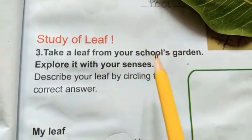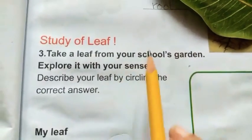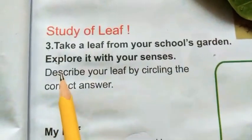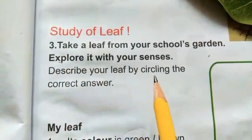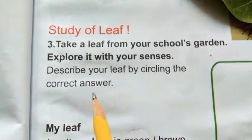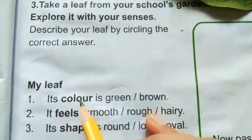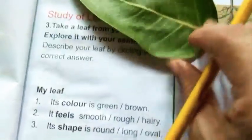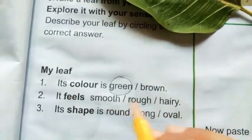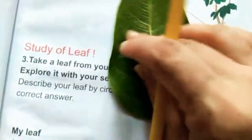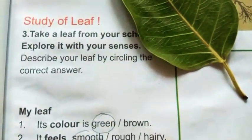Nowadays you can take a leaf from your house garden. Describe your leaf by circling the correct answer. Its color is green or brown — it is green, so I will circle green. It feels smooth, rough, or hairy — this is smooth, so I will circle smooth.